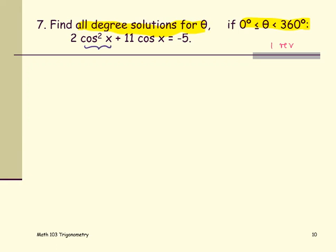The cosine squared x is the same as the quantity cosine x squared and then added by cosine x here multiplied by 11 equals negative 5.